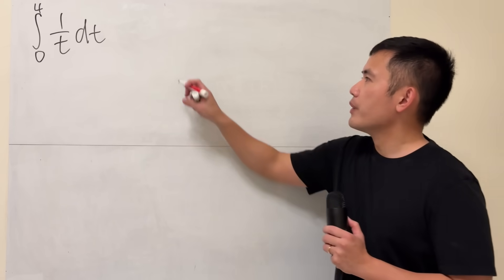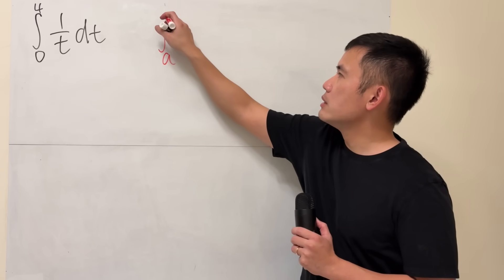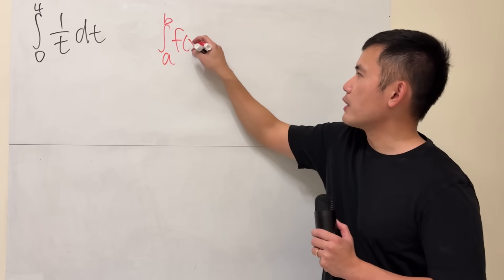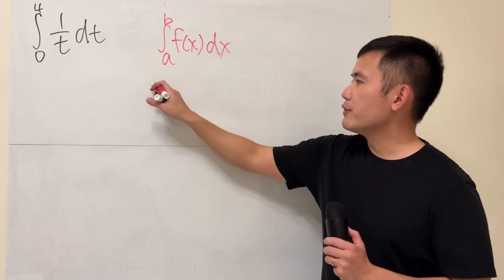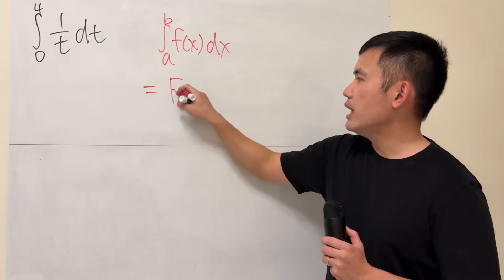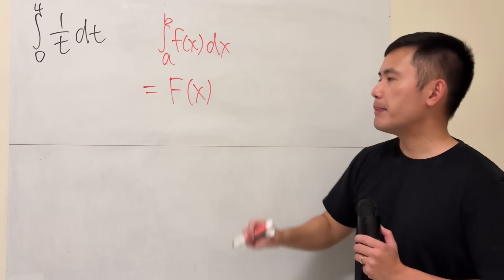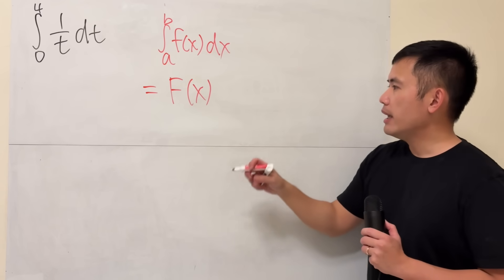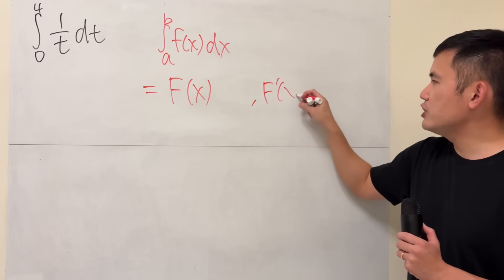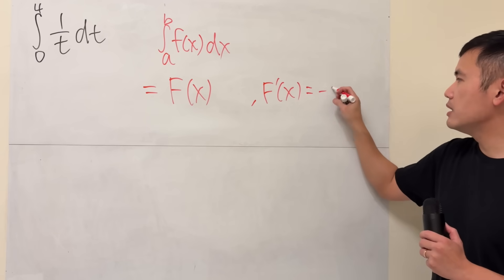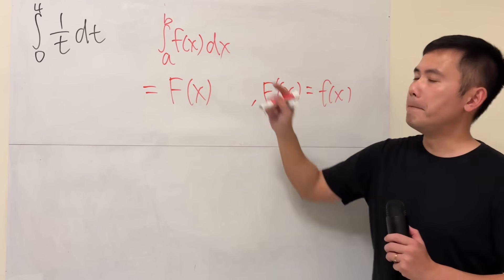Let's do a quick review. When we have a definite integral going from a to b of some function f of x, what we are going to do first is we have to find an antiderivative. Usually we just write it as capital F of x. And if you want to make it clear, you will indicate that if you differentiate capital F of x, you get the little f of x back.